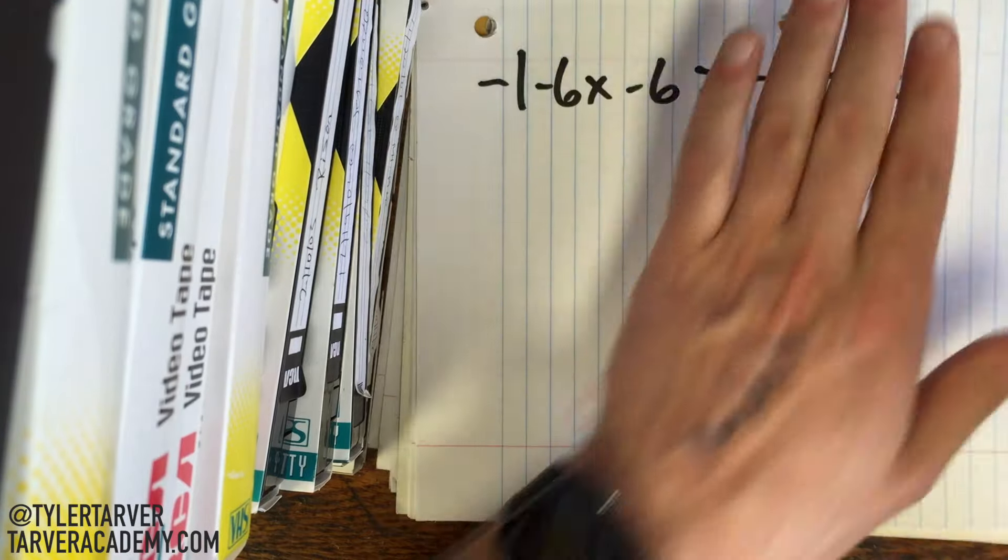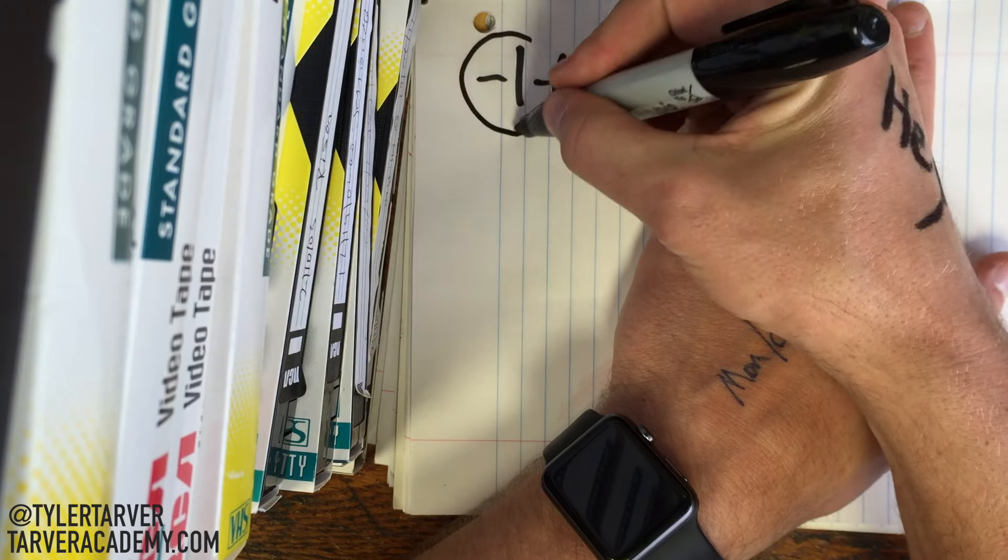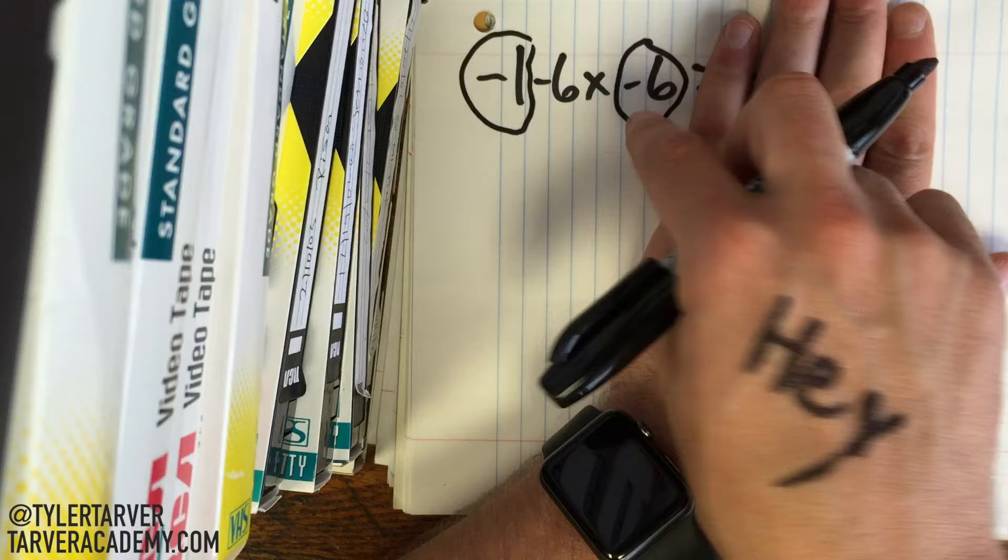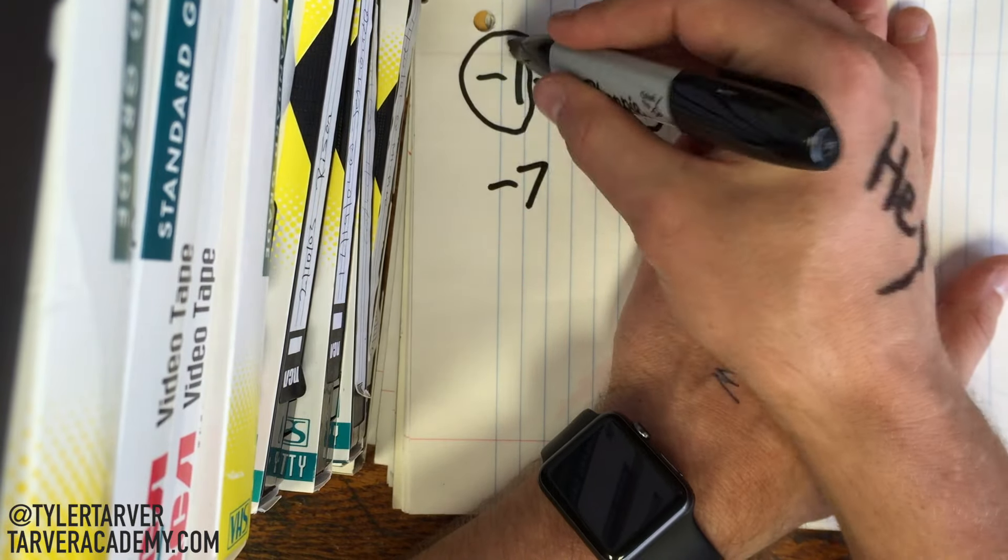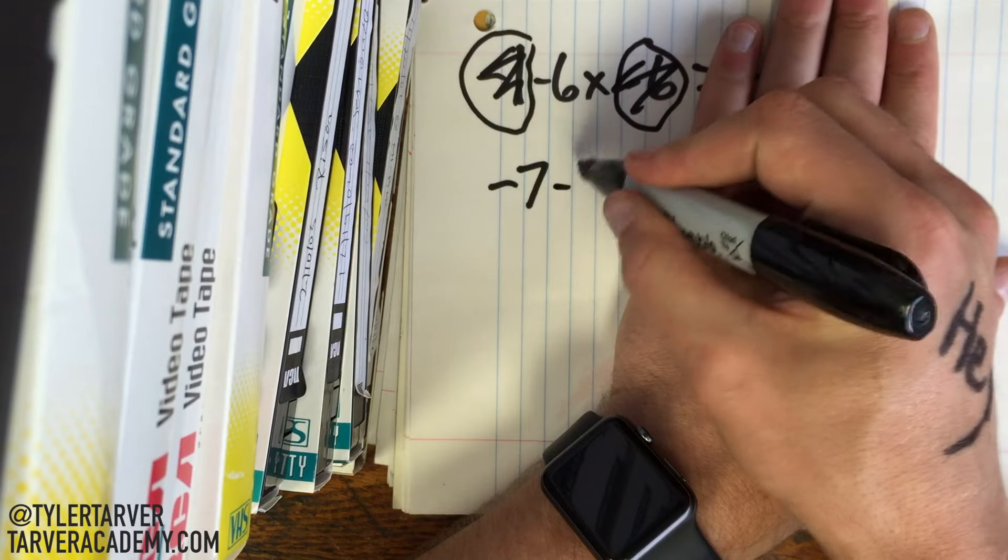Is there anything we can simplify here? Why, yes, there is. We can simplify this regular number and this regular number. So we do regular math. Negative 1 minus 6, which would be negative 7. And then the only thing that's left is negative 6x.